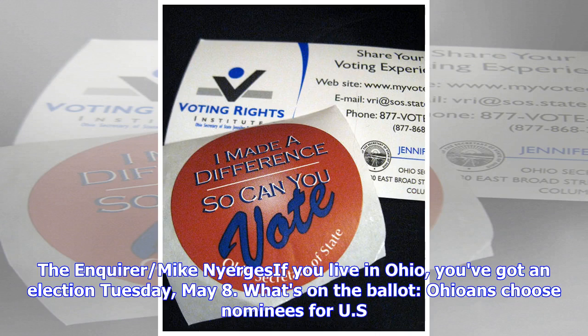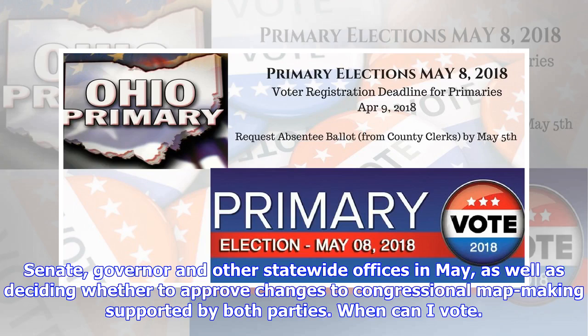What's on the ballot? Ohioans choose nominees for U.S. Senate, governor, and other statewide offices in May, as well as deciding whether to approve changes to congressional map-making, supported by both parties.